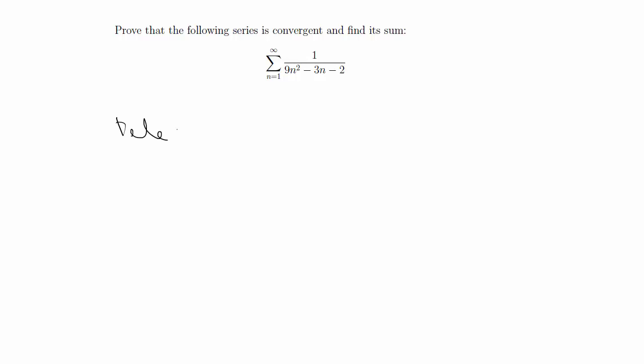In this video we're going to talk about telescoping series. Telescoping series is a special type of series where when you write out the partial sums, you'll be able to see that all the terms cancel each other out except for finitely many. Then you can take the limit of the partial sums to see if the series converges or diverges.